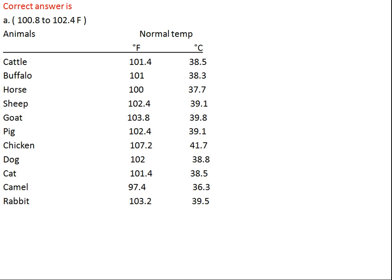Buffalo normal temperature is 101°F. Sheep and pig is 102.4°F. Horse is 100°F. Goat is 103.8°F. Rabbit is 103.2°F. Dog is 102°F. Cat is 101.4°F. Camel is 97.4°F. Chicken is 107.2°F, which is the highest temperature among all.